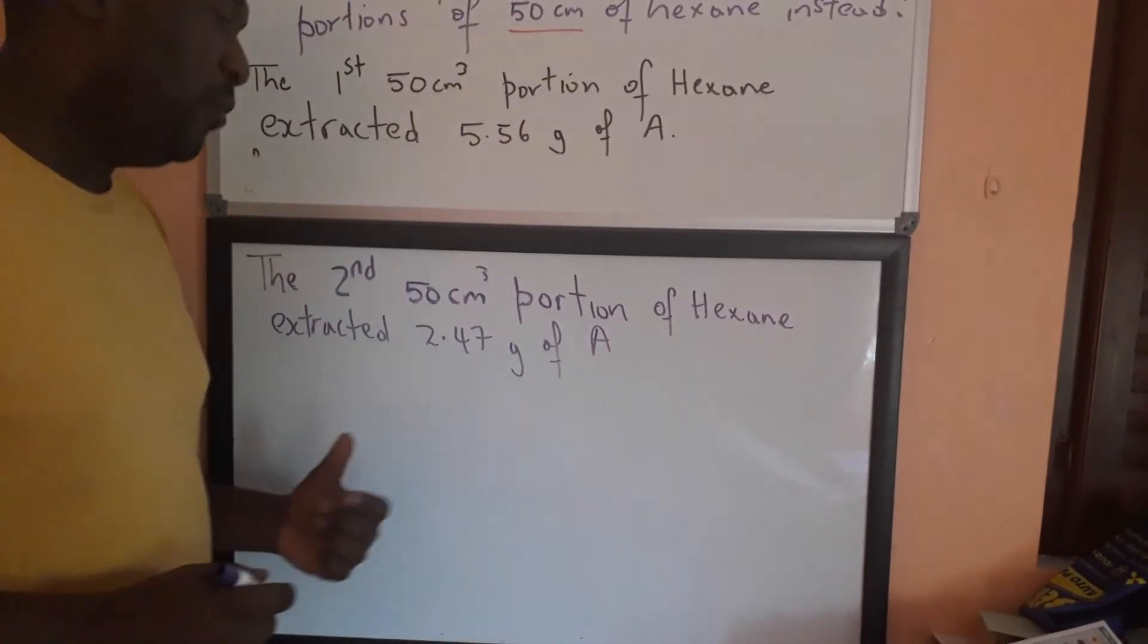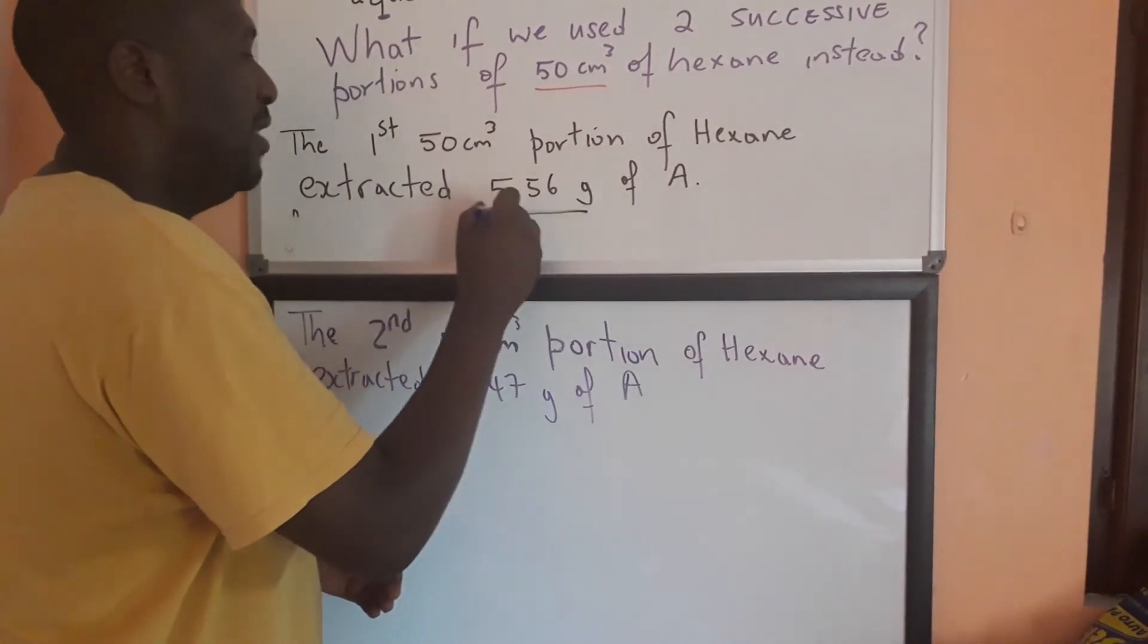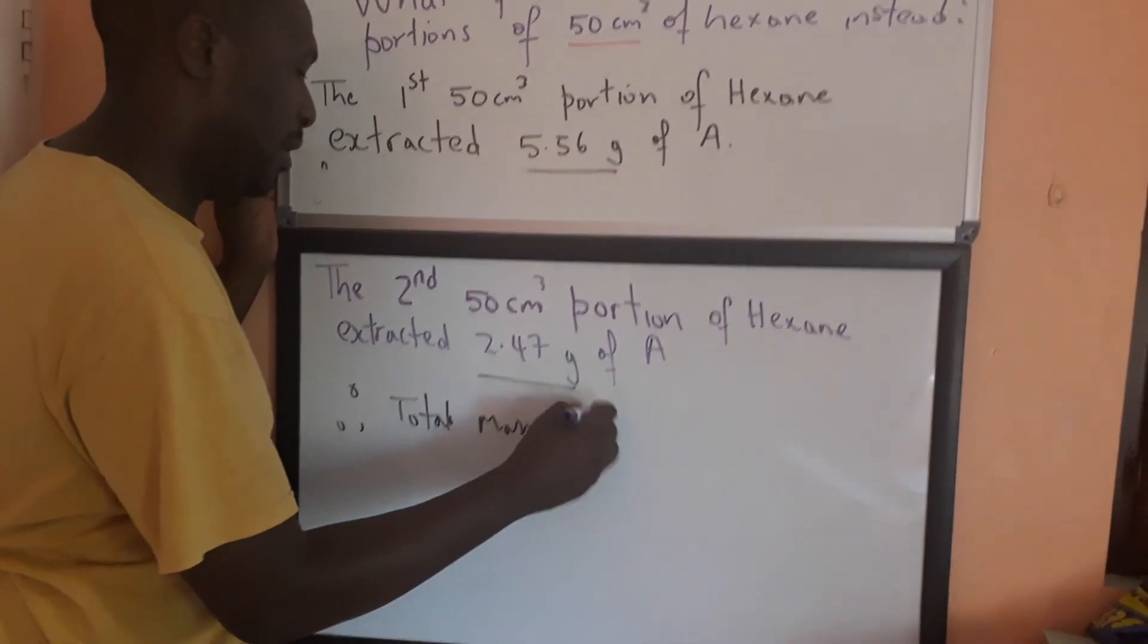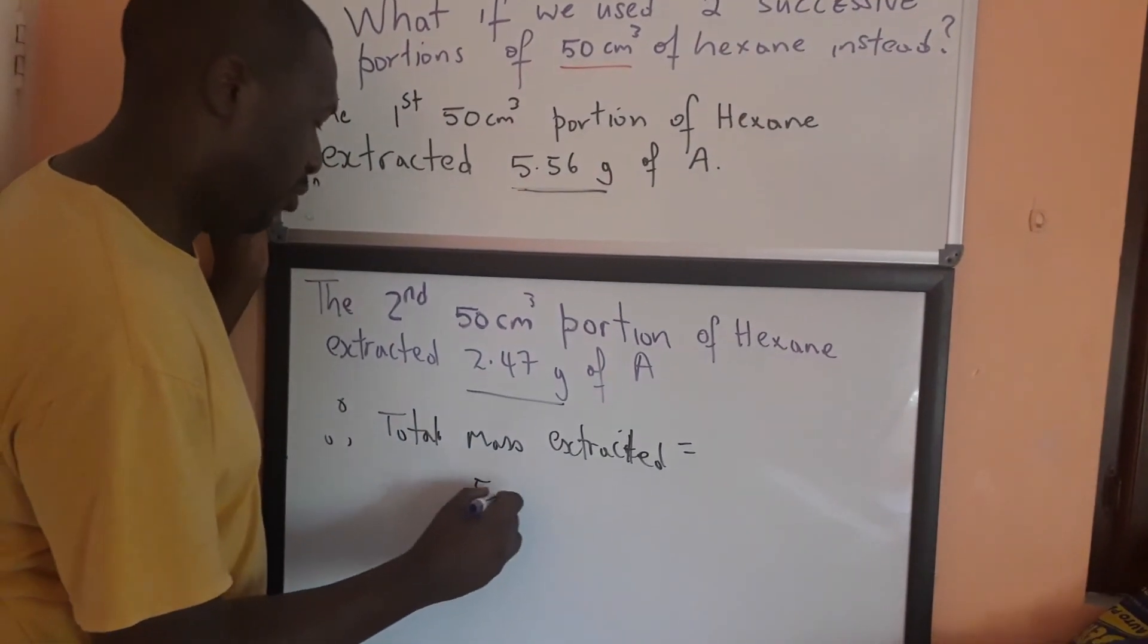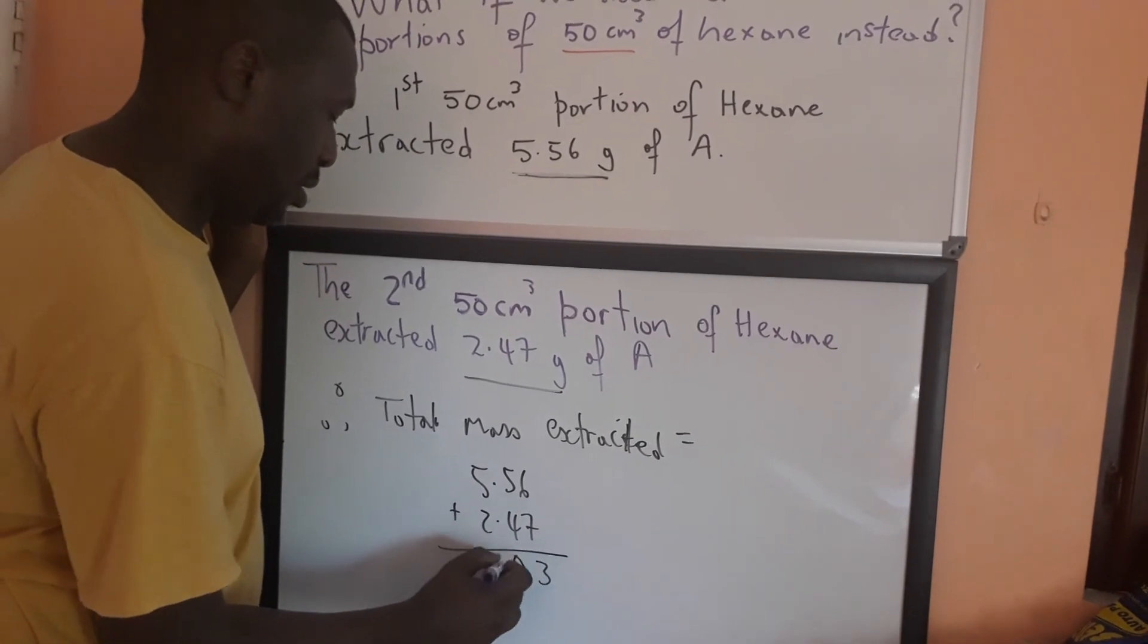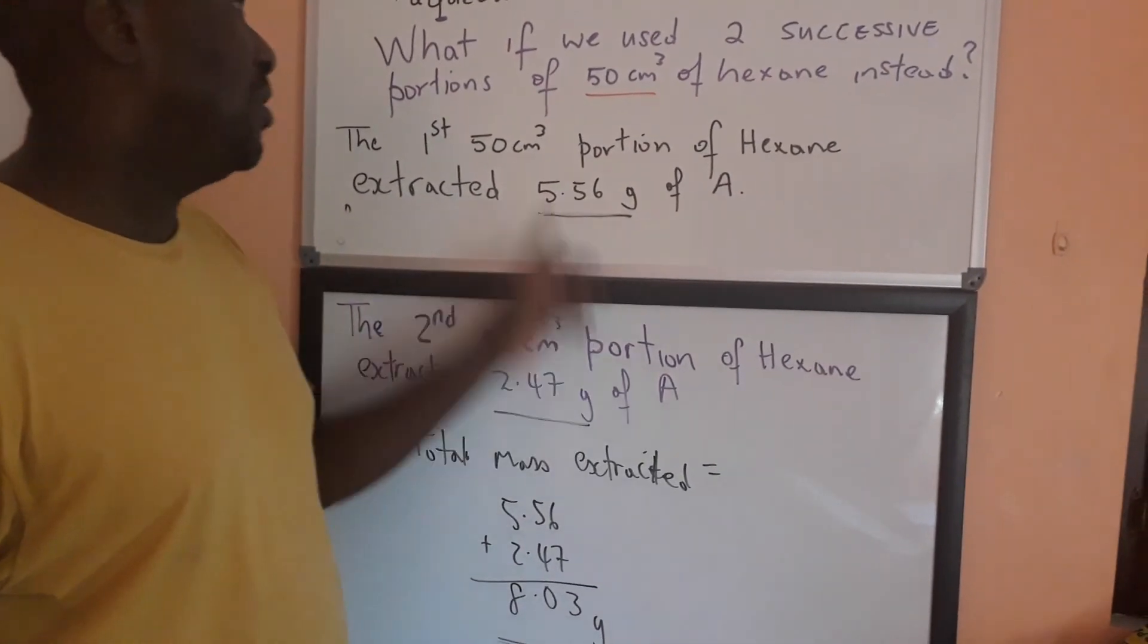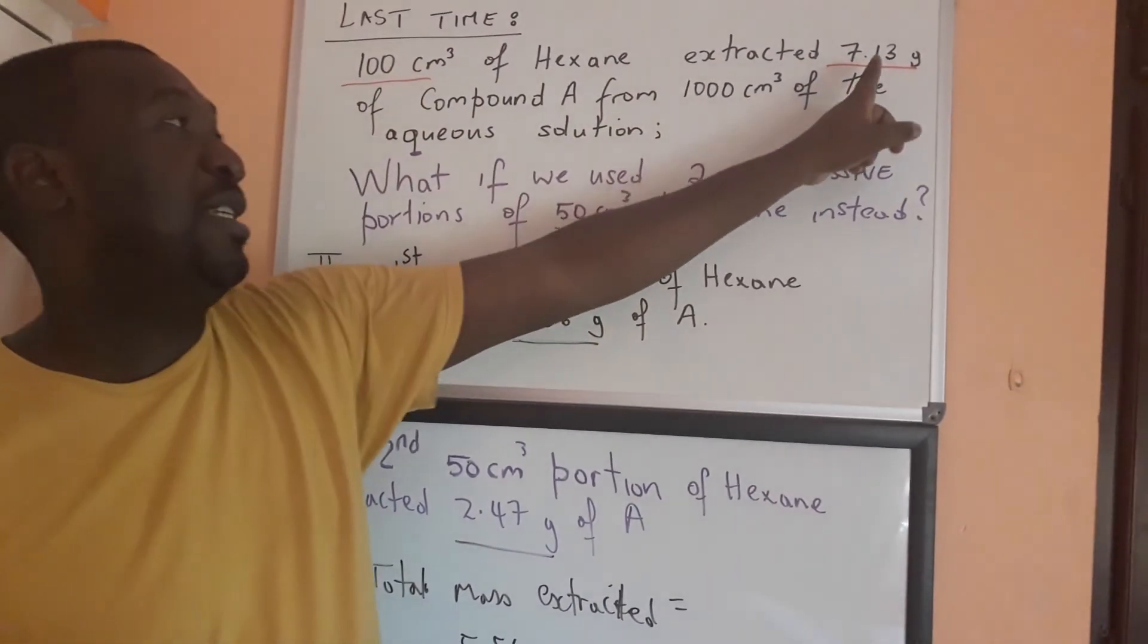Right. So, if we add the two masses extracted, we can get the total mass extracted. First portion extracted 5.56 grams. The second 50CM³ portion extracted 2.47 grams. So, therefore, the total mass extracted would be equal to 5.56 plus 2.47. And that is going to be 8.03 grams. So, therefore, by using two successive 50CM³ portions, we extracted 8.03 grams out of 10, as opposed to when we used one 100CM³ portion, we extracted 7.13 grams.